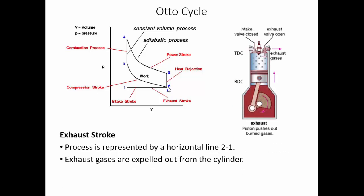Finally, during the exhaust stroke, all combustion gases are cleared from the cylinder so it can take a fresh charge to initiate the next cycle. This is represented by the path from point 2 to point 1 in the diagram. The exhaust gases are expelled, the cylinder returns to its original position, and the whole cycle repeats.